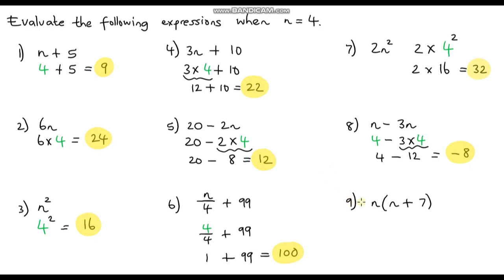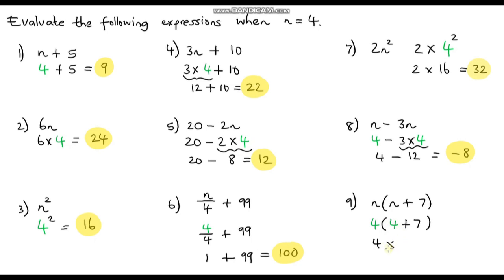Last but not least, question 9: n, and then in brackets n plus 7. Again, we've got two instances of n to substitute. So we've got 4 outside the brackets, and inside the brackets we're going to have 4 plus 7. We always do the brackets first: 4 plus 7 is 11. So we have 4 times 11 — because a number outside brackets means multiply. And 4 times 11 is 44.